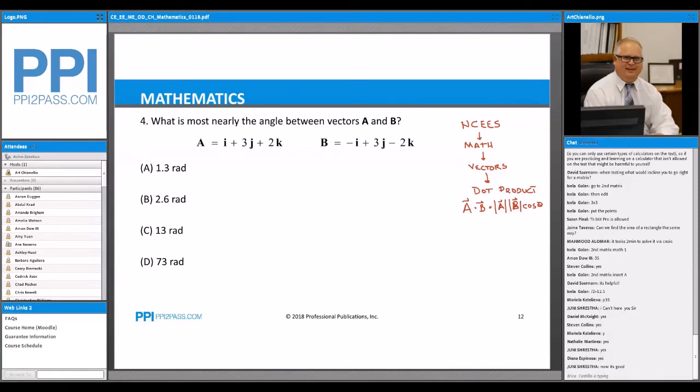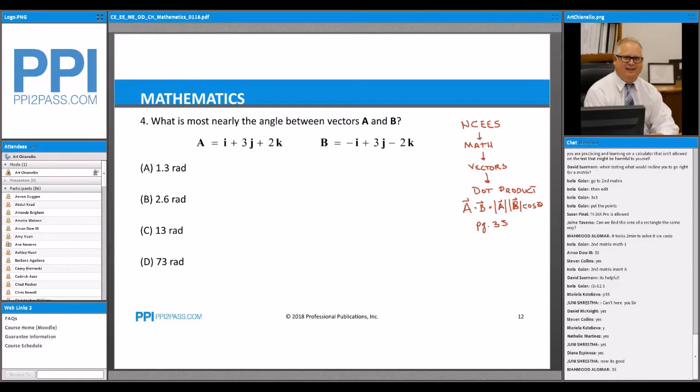So, what are we going to do? So, first of all, what page is this on, the dot product? It's on page 35. Okay. Right? Okay.